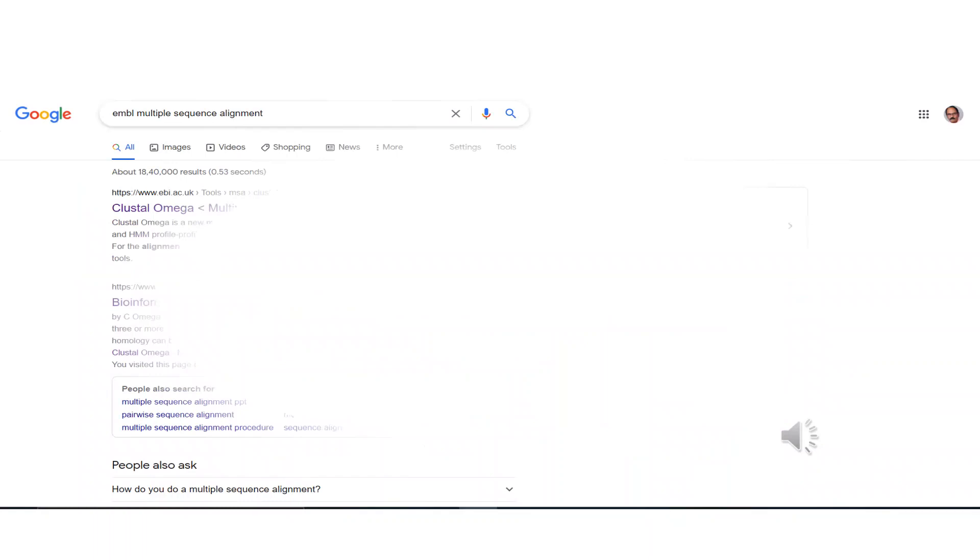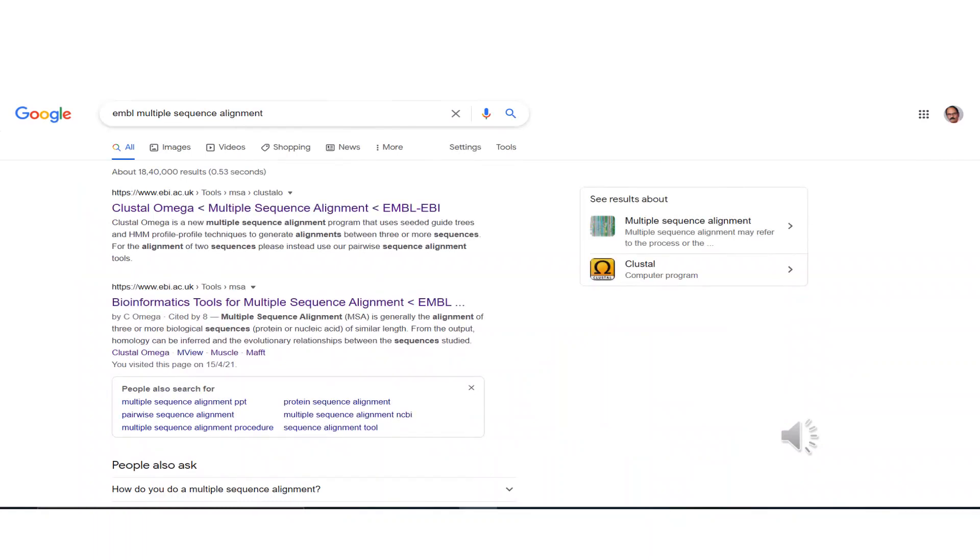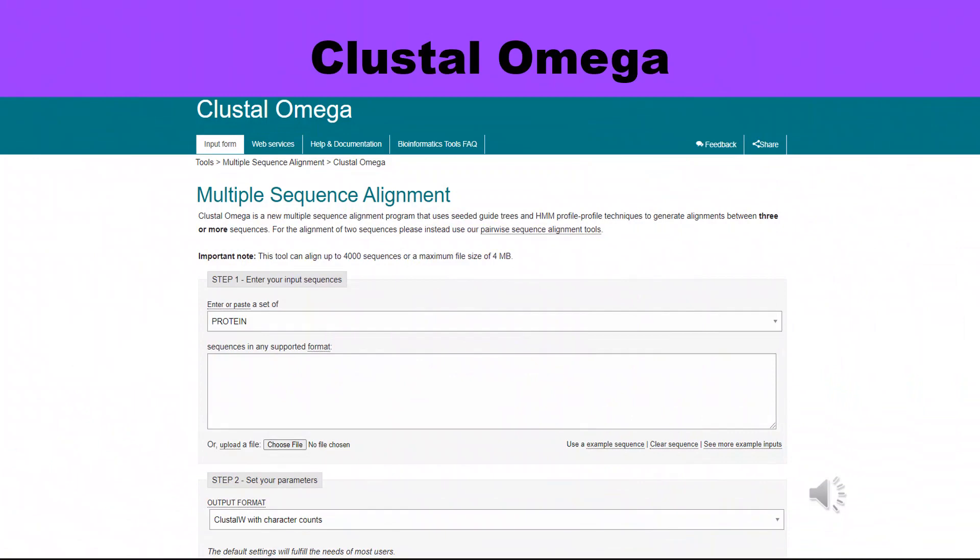After the multiple sequence file is created, the next step is to find out a suitable multiple sequence alignment tool. For that, search the term multiple sequence alignment tools in Google search. From drop down items, select clustal omega multiple sequence alignment emble ebi. Click on clustal omega. It will open a new window of multiple sequence alignment.